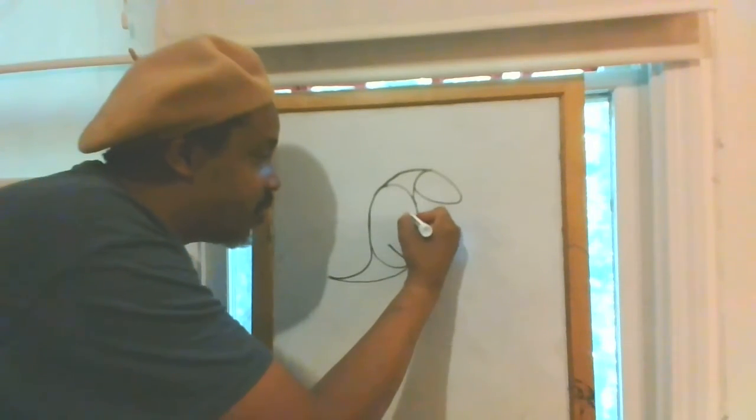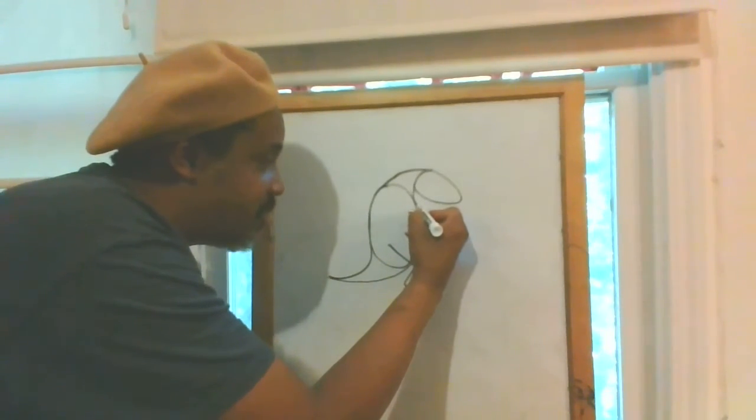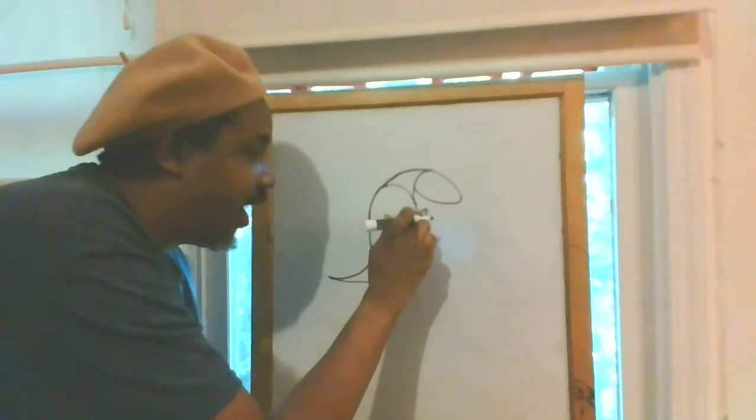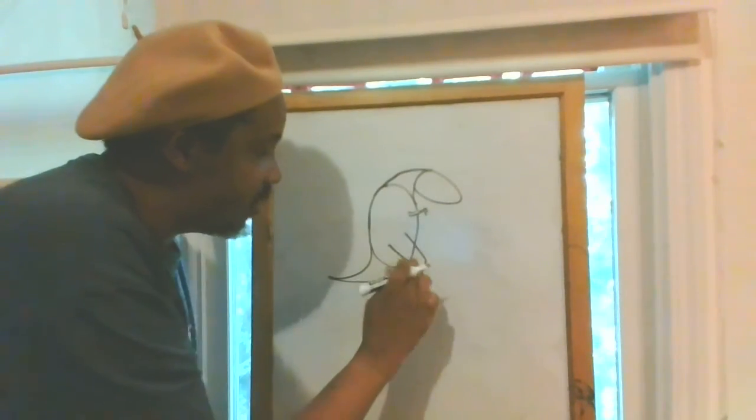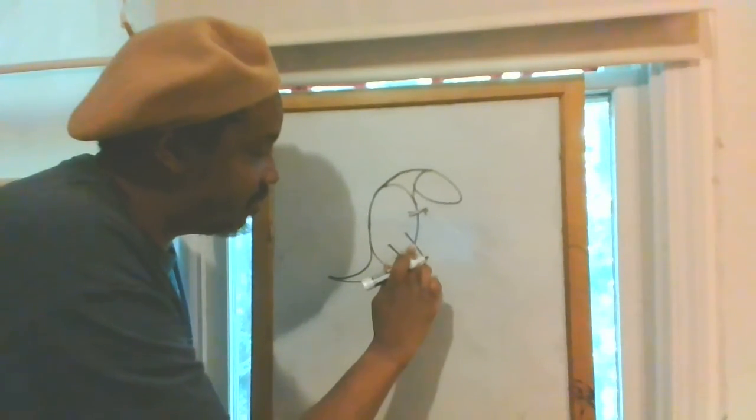And then we're gonna do our little... the thing about the Tyrannosaurus is it has very tiny little hands, little baby-doll hands, kind of like that. We're gonna erase this right here.